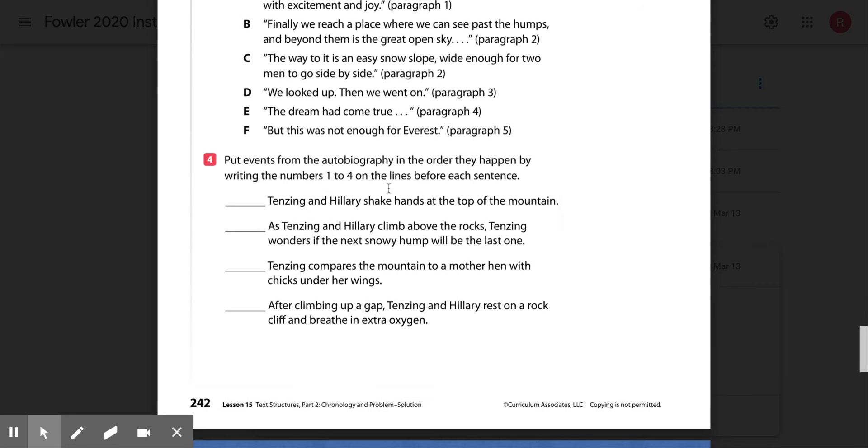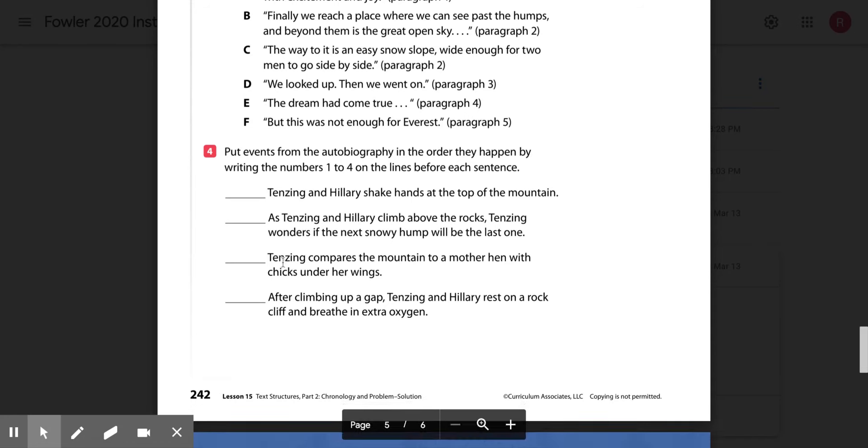Number four, put events from the autobiography in the order they happened by writing the numbers one to four on the lines before each sentence. So you're going to read these sentences and you're going to put a one at whichever one happened first in the story.